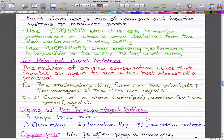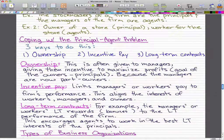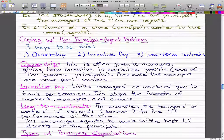Now there are three ways to coping with the principal agent problem and this is ownership incentive pay and long-term contracts and that will be something that we'll discuss in the next video. Please rate comment subscribe if you haven't already and I'll see you guys next time.